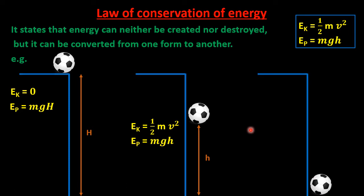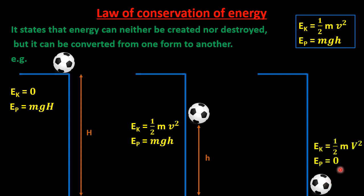Now consider the third case where the ball is about to reach the ground, so the height of the ball from the ground is 0. If h is 0 then the potential energy will be 0. Before reaching the ground the kinetic energy of the ball will be maximum because the velocity is maximum before reaching the ground. The expressions for kinetic energy and potential energy at this point are as shown.